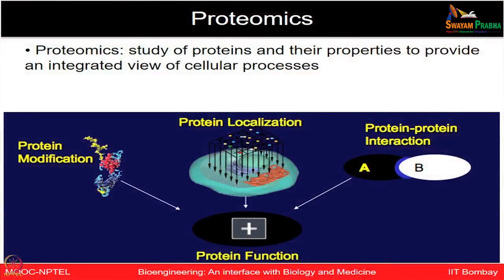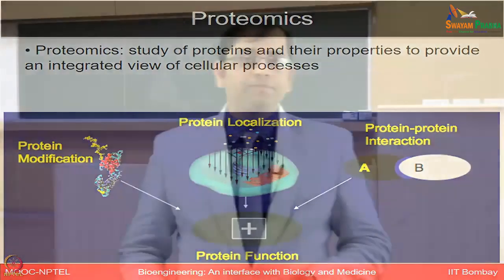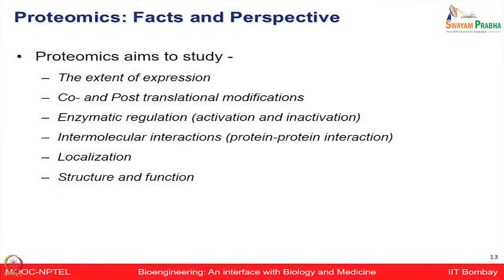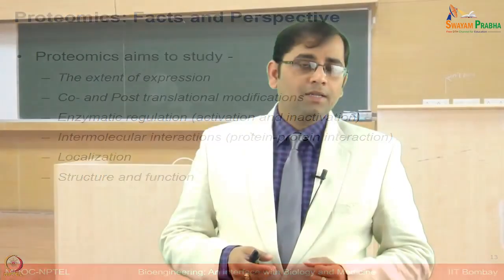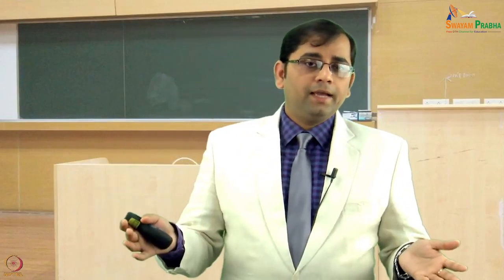The yellow circle shows the complex world of the proteome. Proteome is the set of all proteins expressed by a genome, and the field of proteomics aims to study proteins and their properties to provide an integrated view of all cellular processes, whether protein modification, localization, or protein-protein interactions. Proteomics broadly aims to study the extent of protein expression, how co- and post-translational modifications occur, how enzymatic regulation happens, how intermolecular interactions happen, where proteins are localized, and what the structure and function of these proteins are. Proteomics has very ambitious and complex goals compared to genomics.